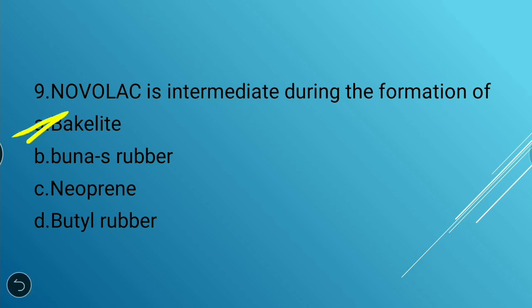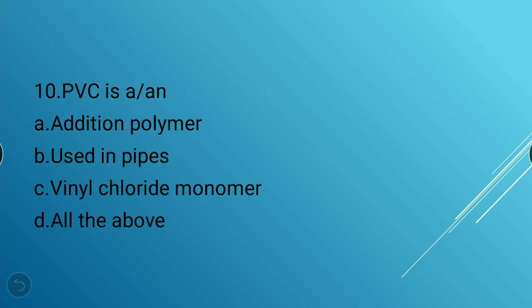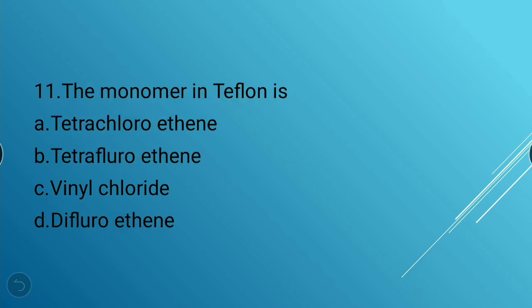Next question: PVC is — options: an addition polymer used in pipes, vinyl chloride monomer, or all of the above. The answer is all of the above — PVC is an addition polymer used in pipes and it is also a vinyl chloride monomer.